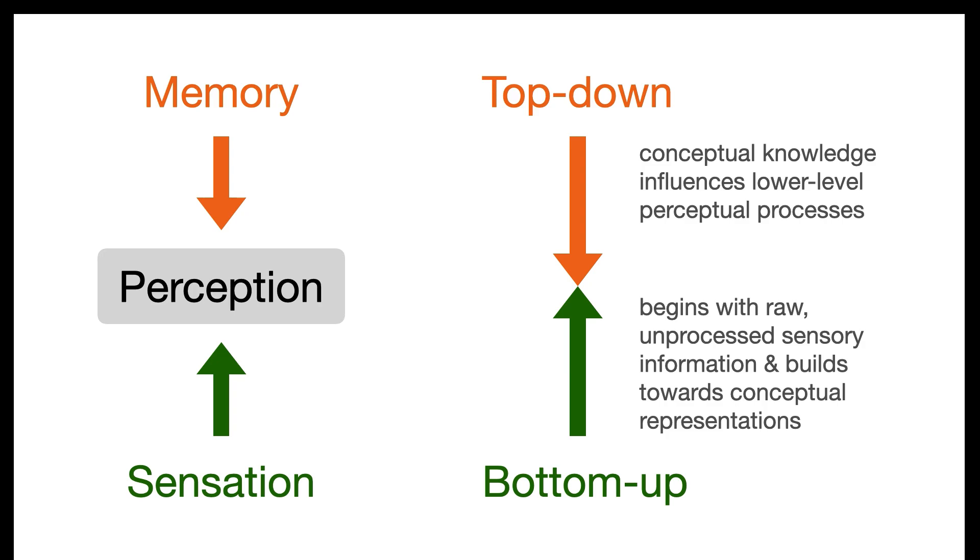Once we recognized the dog, we were able to interpret the otherwise random-looking black and white areas. So while we can distinguish these two types of processing, in reality everything we perceive makes use of both top-down and bottom-up processing.